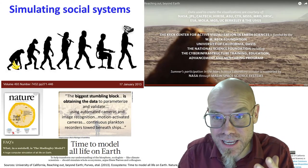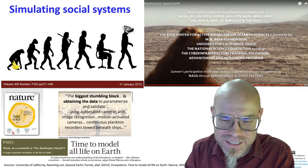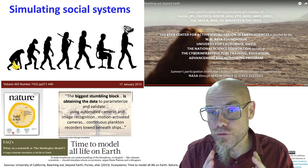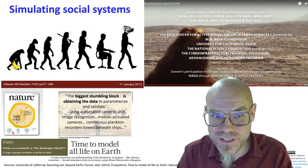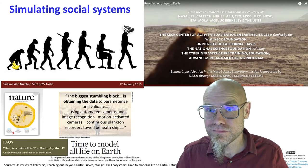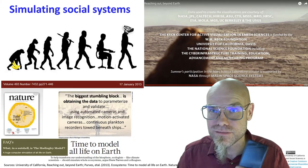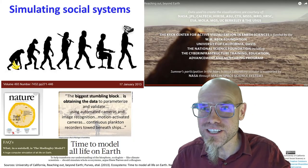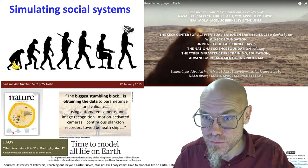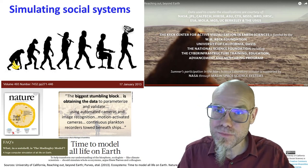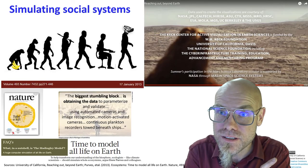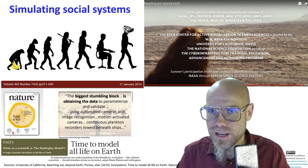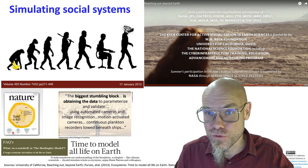So as they say here in this project, the biggest stumbling block is to obtain the data to parameterize and validate the model using automated cameras and image recognition, motion activated cameras, catch the puma, continuous plankton recorders towed beneath ships. So you need to, I mean, for social, recording social data, we are lucky because we don't need a plankton recorder, we just leave the data for free. The digital footprint we leave there, the digital trace data. So we can simulate society already very well, better than we can simulate nature. Because nature doesn't walk around with recording machines all day long, just like we do. So there's a difference.